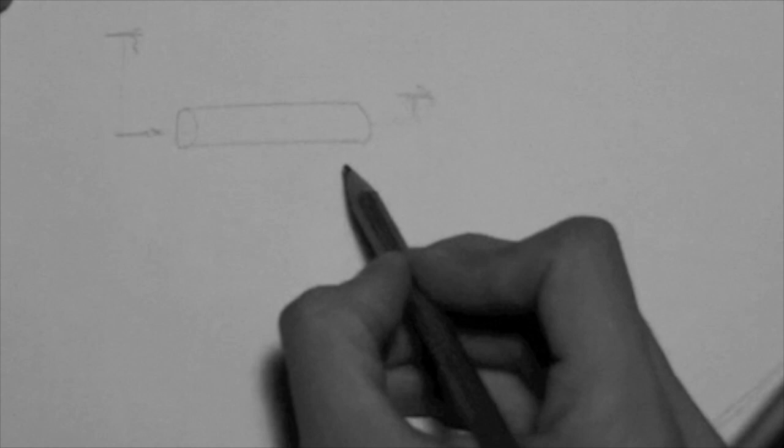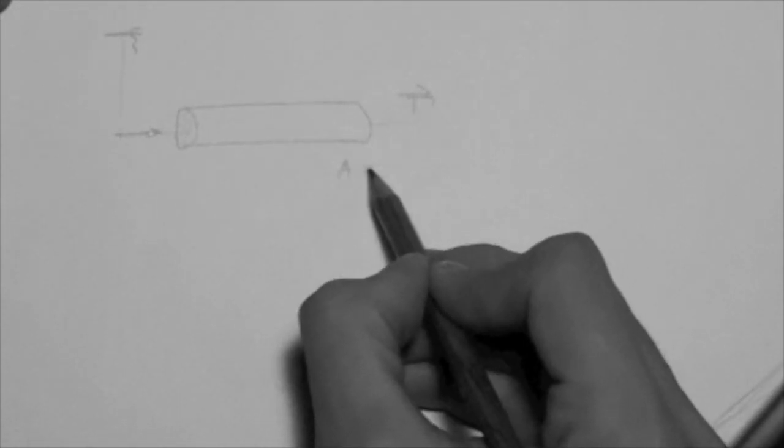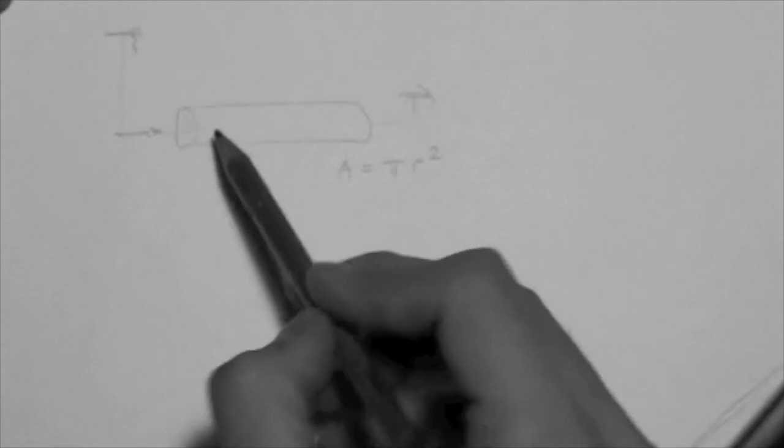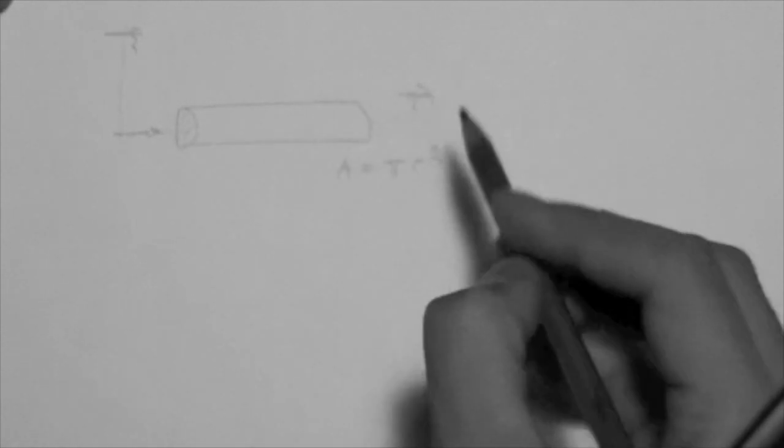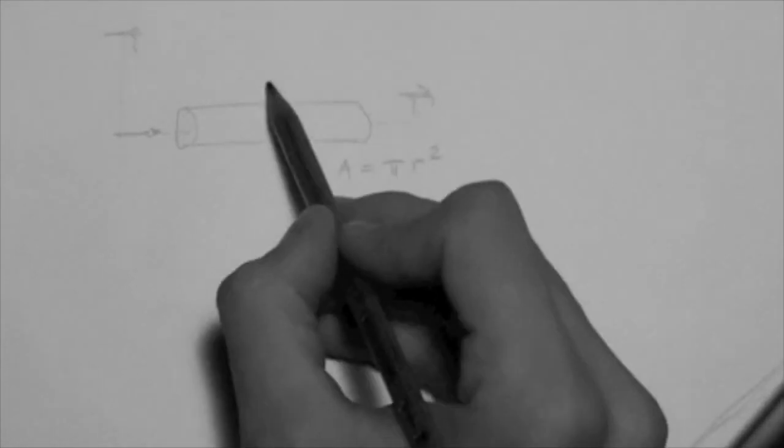Now we have an area, that is the area pi r squared, that is the cross-sectional area of flow of the cylinder. And we have the length, as we have discussed before.